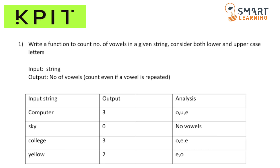We have to count the number of vowels in that input string and return the vowel count. They have given some examples. The first one is 'computer' — in this string there are three vowels: o, u, and e. The second one is 'sky' — there are no vowels, so the output returns zero. The third one is 'college' — there are three vowels. The fourth one is 'lo' — there are two vowels.